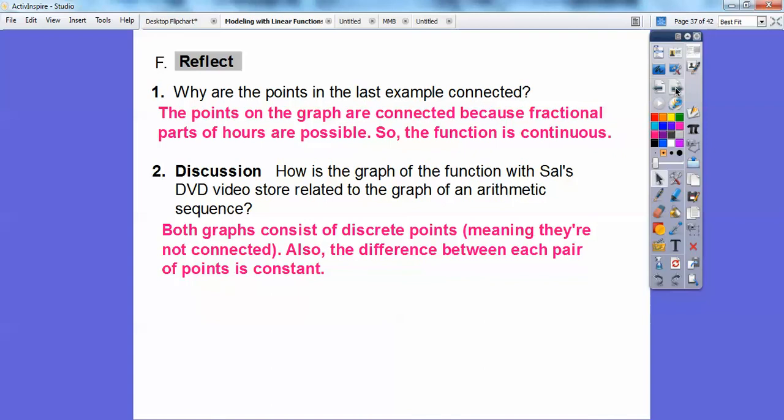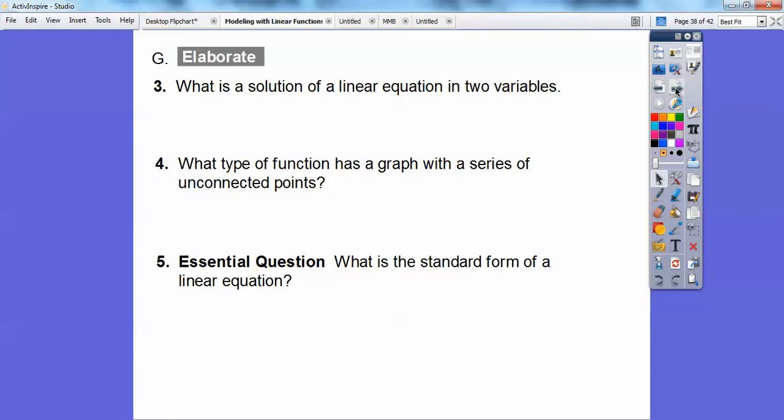Why are the points in the last example connected? The points are connected because fractional parts of an hour are possible to get charged, so this function is continuous. How is the graph of the DVD store related to the graph of an arithmetic sequence? Both graphs consist of discrete points. Arithmetic sequences talk about the first term, second term, third term, fourth term. Sal's thing is also the first DVD, second DVD, third DVD. Both deal with whole numbers, so that gives us discrete points, and the difference between each pair of points is also constant.